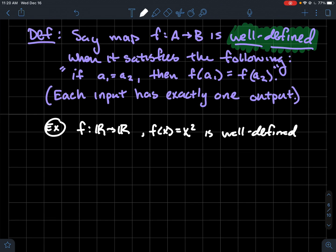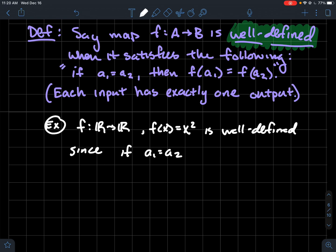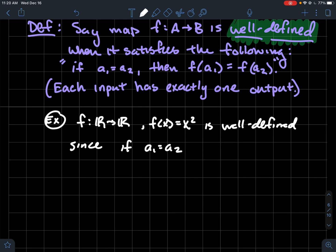So just to give you an example of what that would look like, we're going to show that my favorite function, f of x equals x squared, is well-defined. And so how are we going to do that? Well, we're going to start if a1 equals a2, right? So then those are just two real numbers, perhaps, where we're saying, in fact, you've got the same real number. I want to be able to conclude that f of a1 equals f of a2.